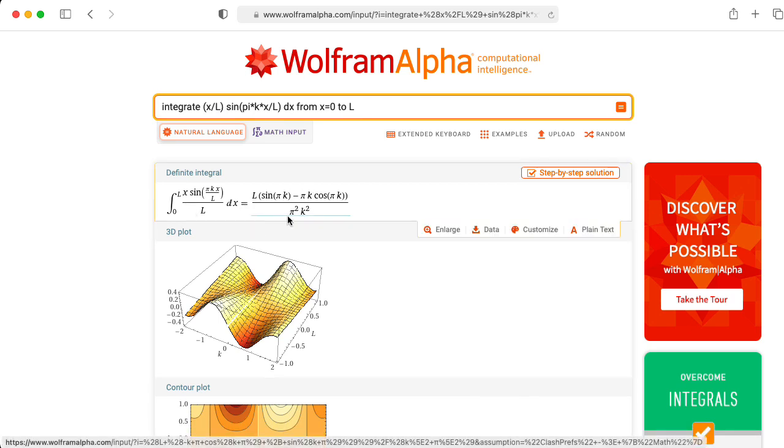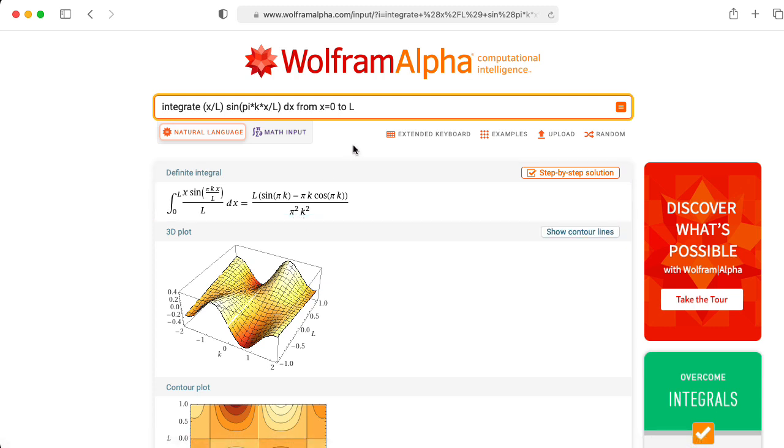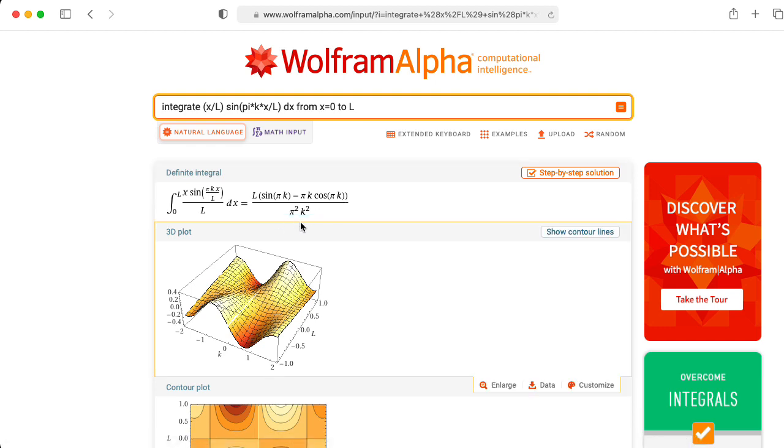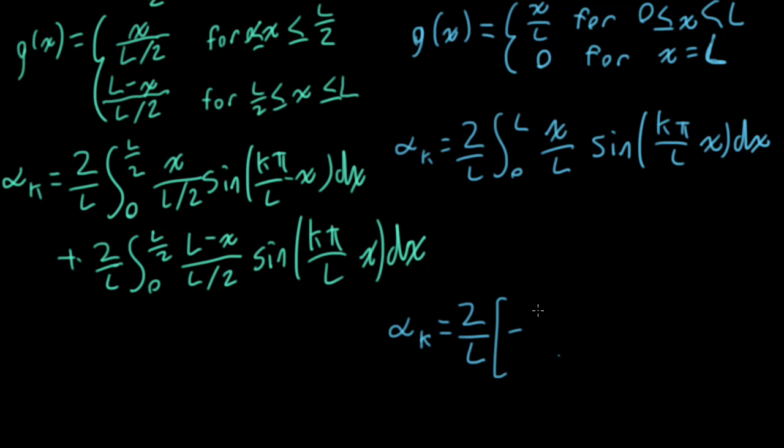Ah, here we go. Okay, so double checking, this is the integral that we want. And there's something that Wolfram Alpha doesn't know that we do, which is that k is an integer. And sine pi of some integer is going to be 0. So this first term goes away. Now the second term has pi k over pi squared k squared. So we'll wind up with l cosine pi k over pi k. Okay, so let's see, I had minus l over pi k times cosine pi k.